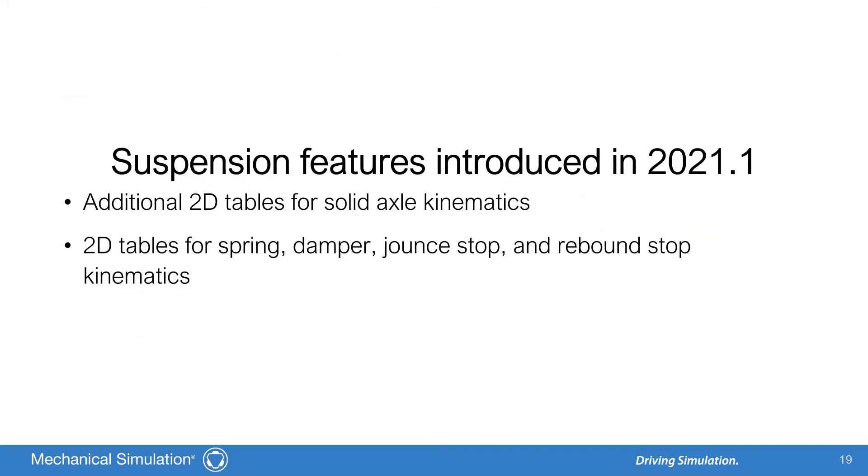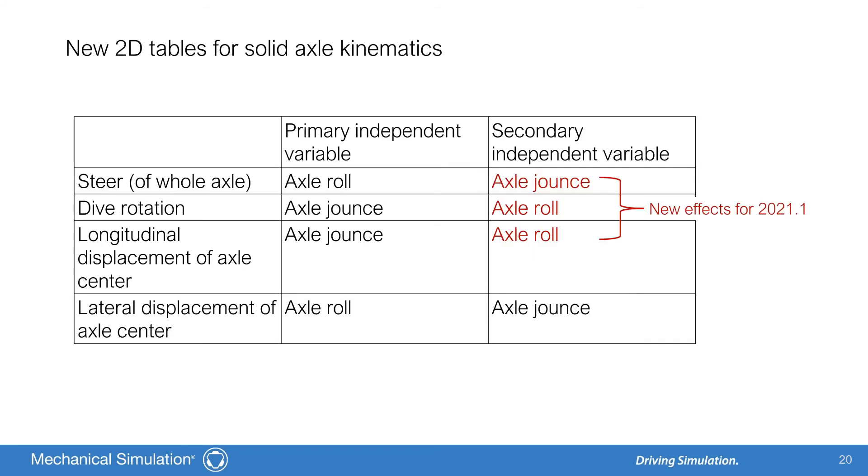In our final segment, I will be covering the suspension features introduced in versions 2021.1. 2D table support for solid axle kinematics, and widespread 2D support for spring, damper, jounce stop, and rebound stop kinematics. For version 2021.1, the solid axle suspension module has expanded support for 2D axle kinematics tables. Previously, only the solid axle lateral movement could be given as a 2D table. Now, the other three solid axle kinematics functions—dive, steer, and longitudinal movement—can be given as 2D.